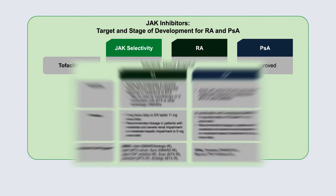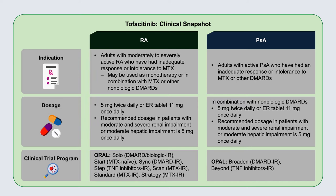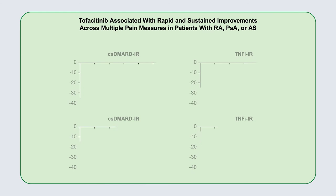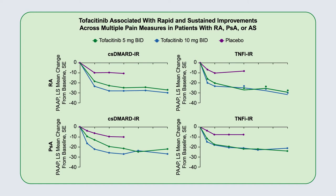To review some high points: tofacitinib is approved for RA and PSA with a very robust development program. There is clear evidence that it improves disease activity, signs and symptoms, quality of life, and radiographic progression. It can be given 5 milligrams twice a day or 11 milligrams once a day. Looking at pain scores with tofacitinib across patients with RA, PSA, or spondyloarthritis, there is clear separation from placebo that is sustained — and notably, it is a quickly acting drug.